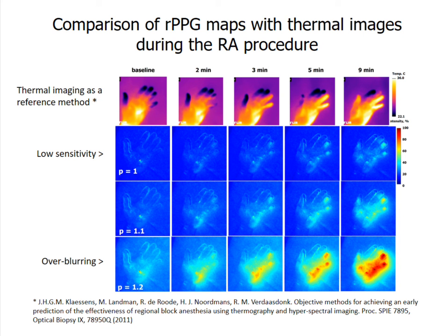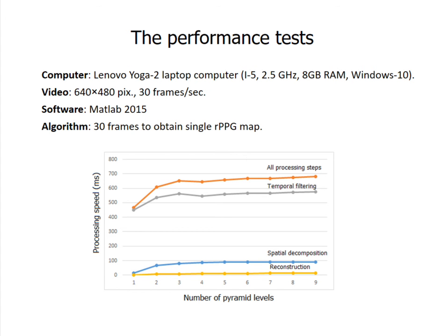Here we see that a higher attenuation parameter p-value increases the sensitivity but leads to over-blurring of rPPG maps. Computing speed tests were also performed. We tested our algorithm on a modern laptop computer with VGA resolution video at 30 frames per second using MATLAB software. We tested how the number of pyramid levels affects the speed of calculation. Each calculation cycle processes 30 frames to obtain a single map, so the total time available per cycle is 1 second. The slowest and most computationally expensive processing is temporal filtering, as it must be performed on all pixels of video frames. Increasing pyramid levels above 3 did not significantly increase computational time. Results showed that VGA resolution video at 30 frames per second can be processed in real time using our algorithm.